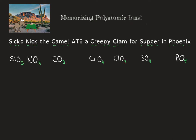Now what I like to do is underline the vowels — or point to them in this case. Sicko has two vowels. Nick has one vowel. Camel has two vowels. Creepy has two vowels. Clam has one. Supper has two. And you have to know how to spell Phoenix, but it has three. The number of vowels equates to the amount of negative charge on the polyatomic ion. Silicate has a 2− charge, nitrate has a 1− charge, carbonate has a 2− charge, chromate has a 2− charge, chlorate has a 1− charge, sulfate has a 2− charge, and phosphate has a 3− charge.